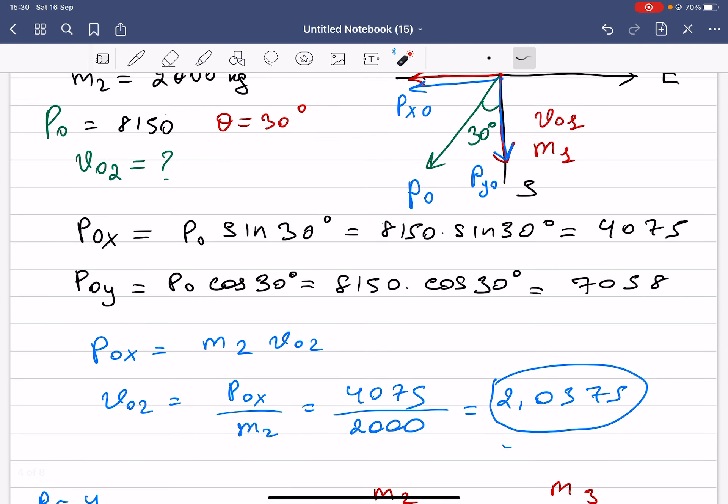You can also find v_initial_1 for mass one. In that case, you use the y component because it's moving in the y direction. P_initial_y divided by m1, so if you calculate it, you can get v_initial_1.